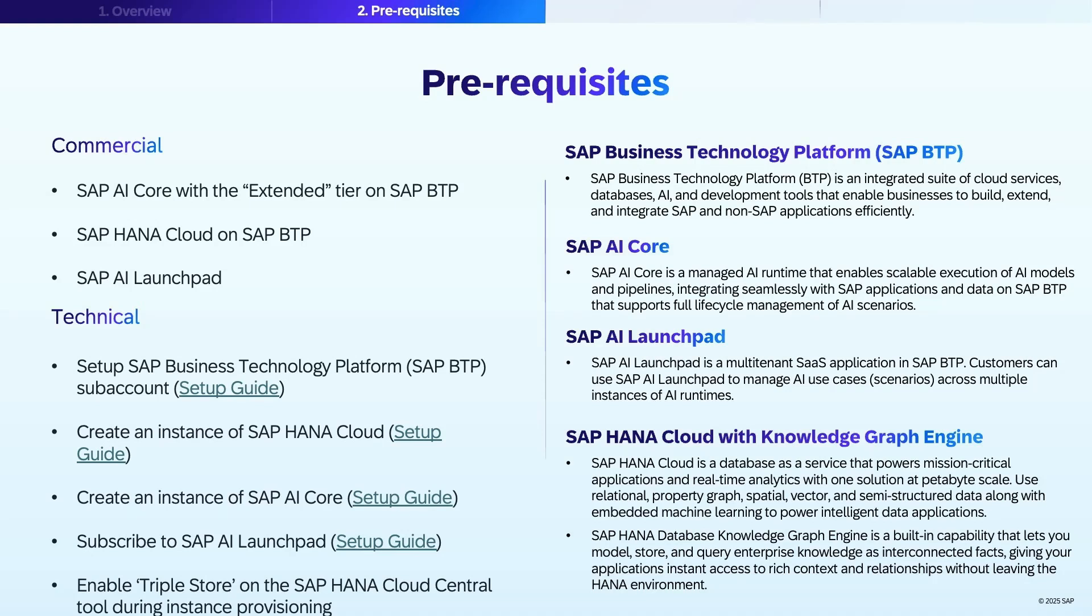SAP AI Core is your engine for orchestrating and scaling AI model pipelines. It integrates with SAP apps and automates retraining or extraction jobs. SAP AI Launchpad is where you register your AI scenarios, manage model deployments, and oversee the full lifecycle of your AI assets. Setting up these prerequisites is the first step to ensuring your retrieval augmented generation implementation is secure, scalable, and ready for enterprise workloads on SAP.